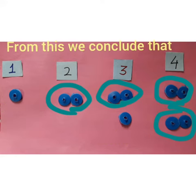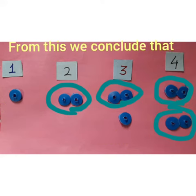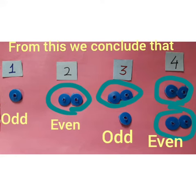So from this we conclude: where something is left, it is an odd number, and where nothing is left, it is an even number.